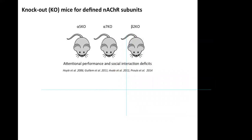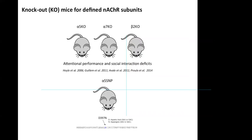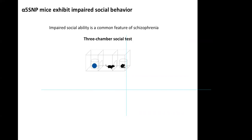Several labs, including our lab, showed that knockout mice for defined nicotinic receptor subunits are characterized by prefrontal cortex-associated deficits such as attentional performance and social interaction deficits. We developed the alpha-5 SNP mouse — the mouse carrying the human polymorphism in the alpha-5 subunit — and we aimed first to test these mice for behaviors associated with schizophrenia, and also to study the impact of this variant on neuronal and circuit mechanisms underlying cognitive deficits.